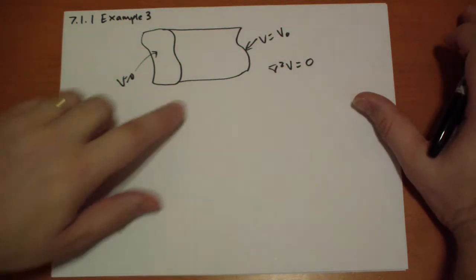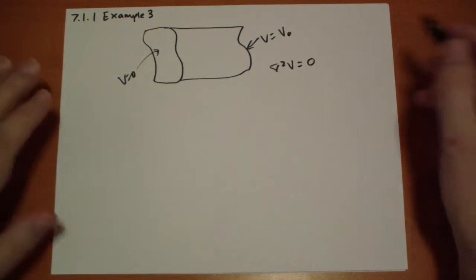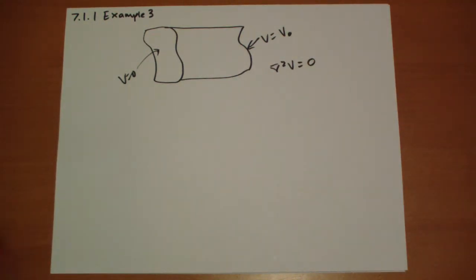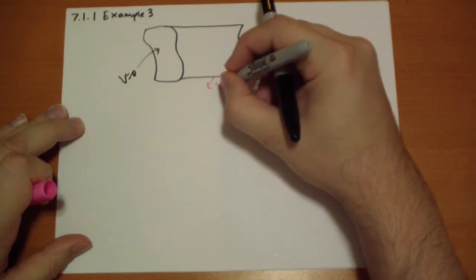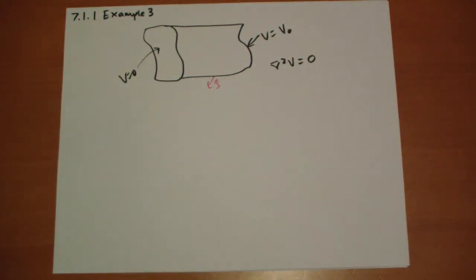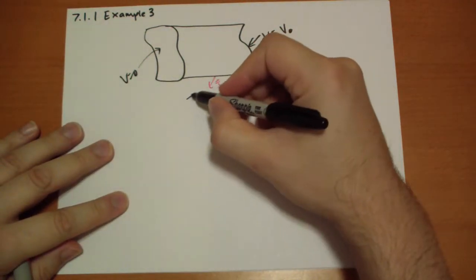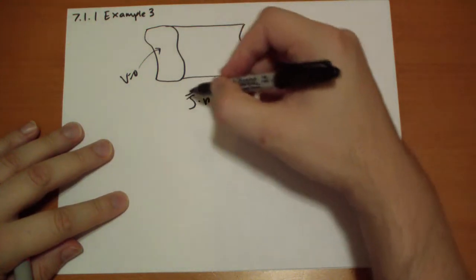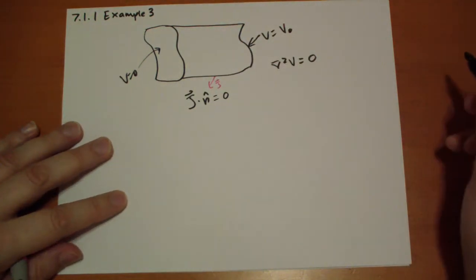On the surface, we don't have any current leaking out, so we don't have any of this business where j vector is leaking out there. So we've got to set the rule that j vector dot the n hat direction of whatever surface we're using has to be equal to zero.